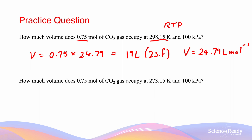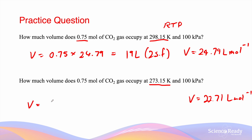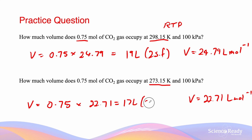The second question is very similar, however this time it is given to us at STP, which is 273.15 Kelvin and 100 kPa. We know that at STP the molar volume is 22.71 liters per mole. Since we have 0.75 moles, the volume is going to equal 0.75 multiplied by 22.71, and that equals 17 liters to two significant figures.